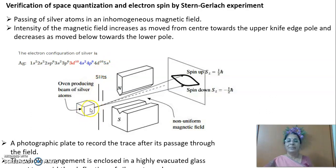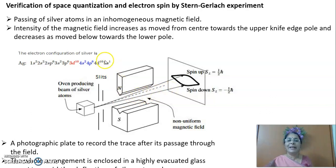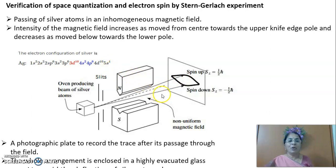From the oven, a thin beam of silver atoms comes out and is directed between the poles of the magnet. The magnets are designed such that the north pole is very strong and the south pole is weaker. When the silver atoms pass through the inhomogeneous magnetic field, you can see that the electrons of atoms which had clockwise spins were all deflected in the upward direction, and those electrons which have anticlockwise spins are deflected in the downward direction. There is a photographic plate which records the tracing of these atoms. So the film shows only two lines: the upper trace is due to electrons having clockwise spins and the lower trace is due to electrons having anticlockwise spins.